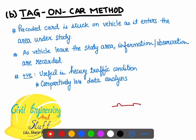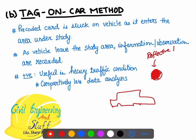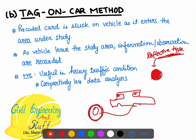This tag on the car can be of any form — for example, a simple circular reflective type tag placed either at the front or back of the vehicle. This reflective type tag is placed at the origin point, so as and when the vehicle travels to the respective destination point, noting this reflective tag becomes an easier thing to do compared to noting all the license plates.